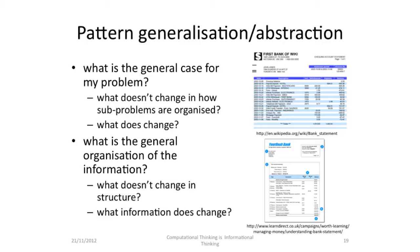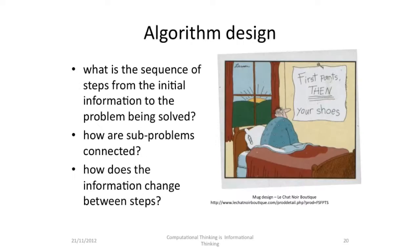For pattern generalisation and abstraction, we ask: what's the general case for my problem? What doesn't change in how the sub-problems are organised? What does change? What's the general organisation of the information? What doesn't change in the structure? What information does change? And then finally for algorithm design, we ask: what is the sequence of steps from the initial information to the problem being solved? How are the sub-problems connected? How does the information change between the steps?